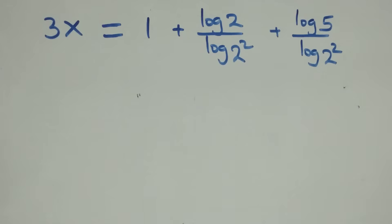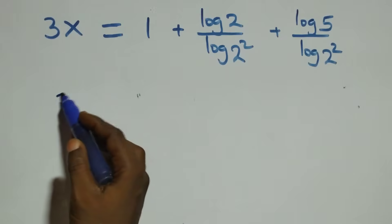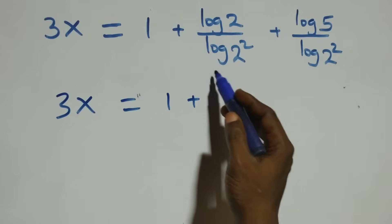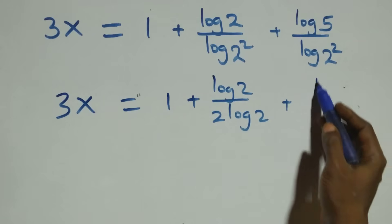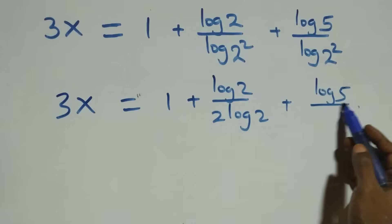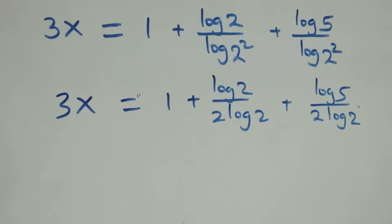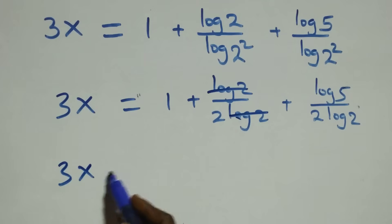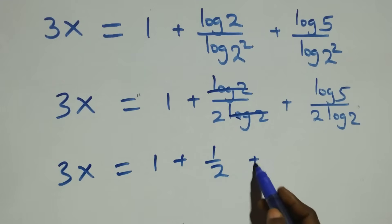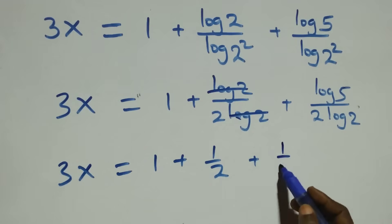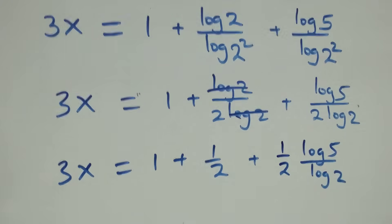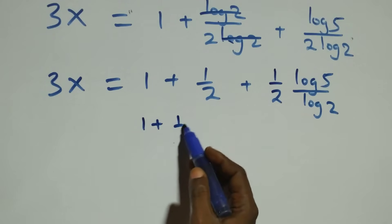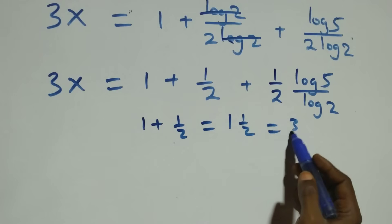Next step: we apply the power rule of logarithms. The exponent two comes down: log of two squared equals two times log two. So what we have becomes three x equals one plus log two over two log two plus log five over two log two. Log two cancels in the first fraction, leaving one half. So three x equals one plus one half plus one half times log five over log two. Then one plus one half is three over two.